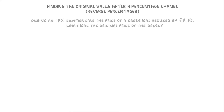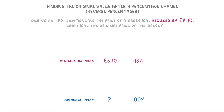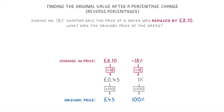Let's try one more of this type. During an 18% summer sale, the price of a dress was reduced by £8.10. What was the original price of the dress? This time, £8.10 represents the 18% reduction from the original price of 100%. So to find 1%, we divide £8.10 by 18 to get £0.45. And then to find the original price, we multiply by 100 to get £45. So the original price was £45.